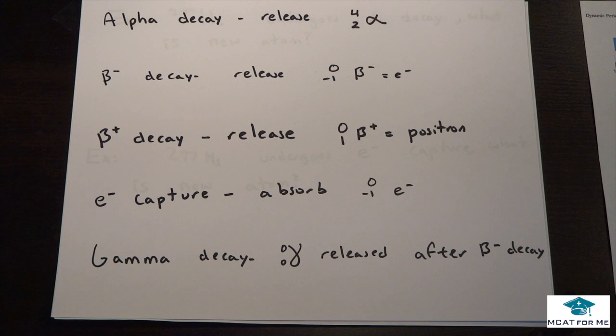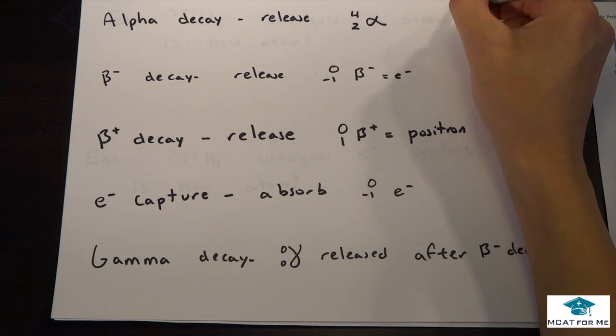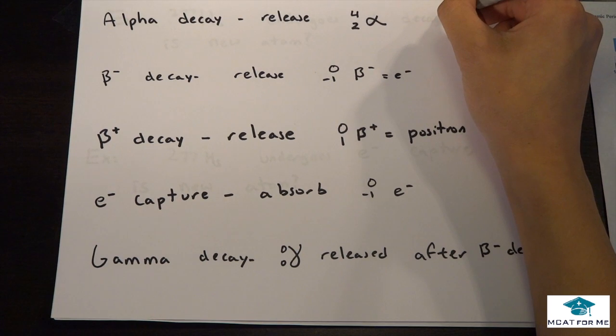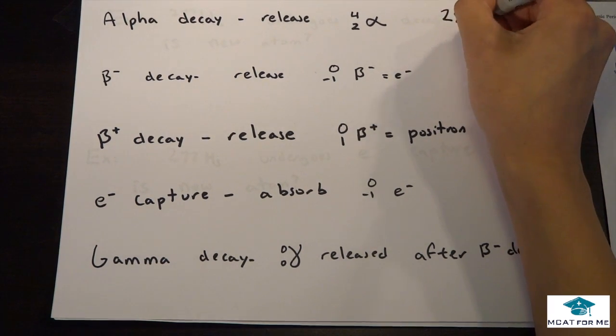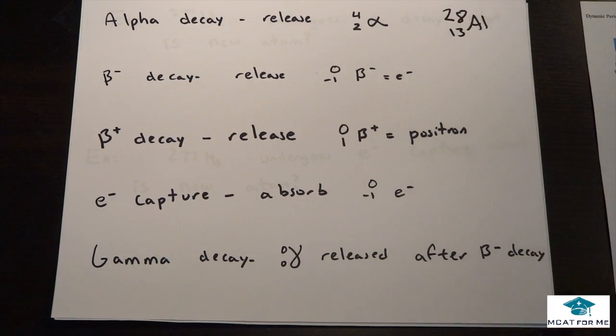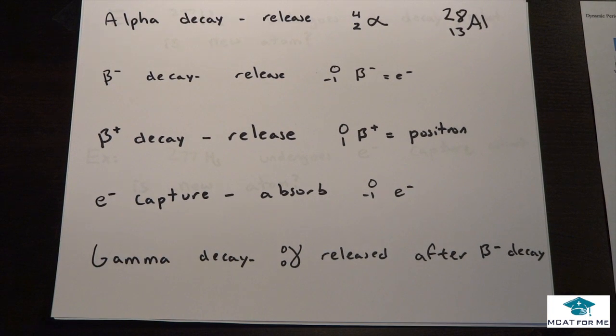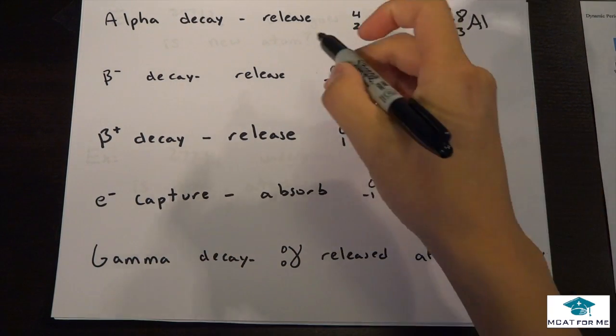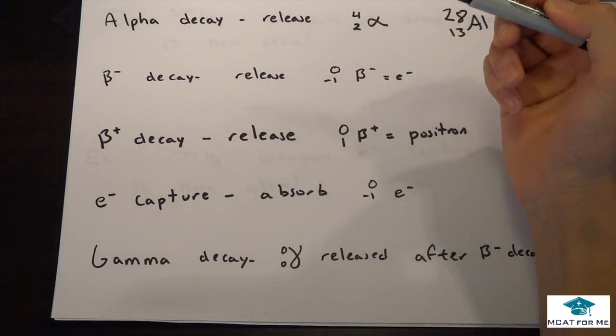And so the next thing is we're going to be talking about decay: alpha, beta, electron capture and gamma decay. So these are fairly simple, you just have to kind of memorize them. Let's use the example of 28 over 13 aluminum. So this is aluminum-28 which has 13 protons and we'll see how we do this with each of the types of decay.